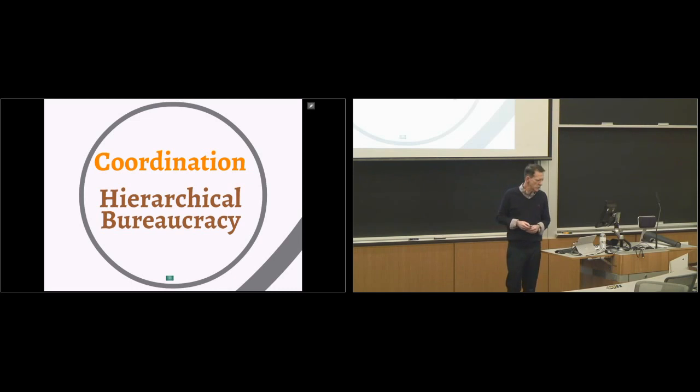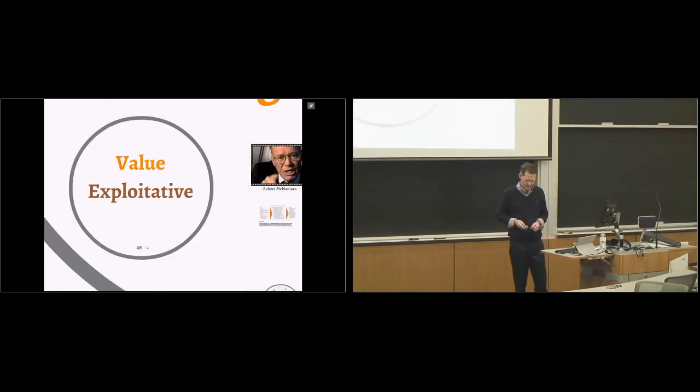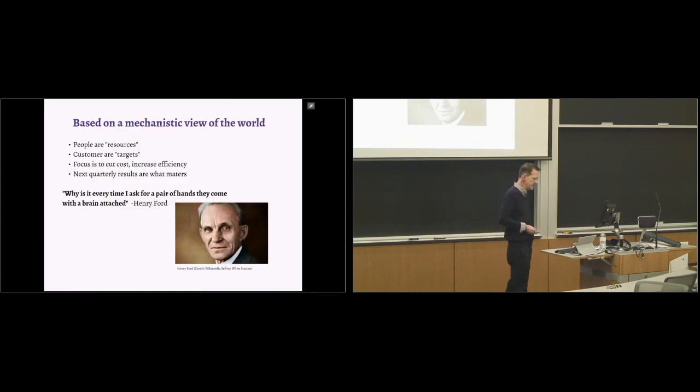And so to get conformity to that goal, we look to get some control around that. So how does the coordination occur? Well, it's hierarchical bureaucracy. And if I were to ask you to go to the blackboard and draw a design of your organization, it would probably, if you're in a traditional organization, it would look like this, right? It's a typical org chart. Polygons stacked on top of other polygons. And this is the geometry of traditional management.